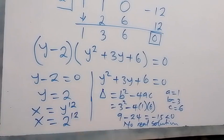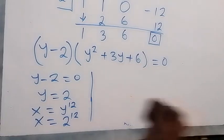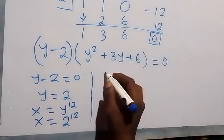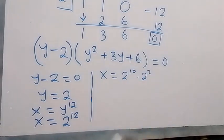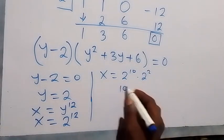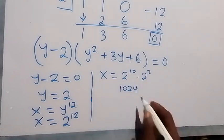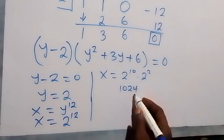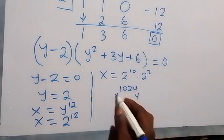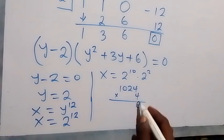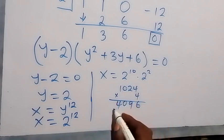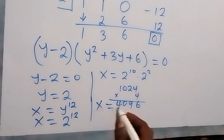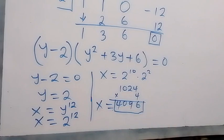Now, 2 raised to the power of 12 equals 2 raised to the power of 10 times 2 raised to the power of 2. Since 2 to the 10th is 1024 and 2 squared is 4, we multiply: 1024 times 4. That gives 4096. So x equals 4096.